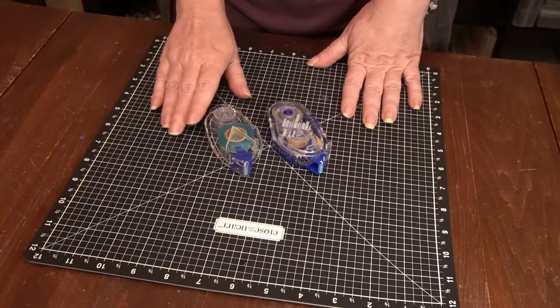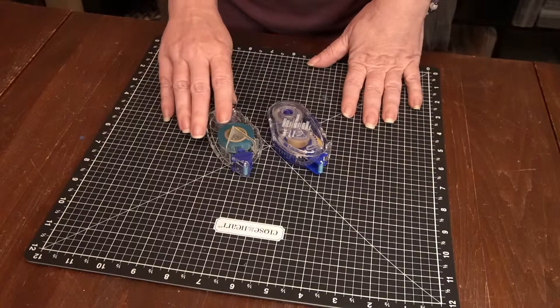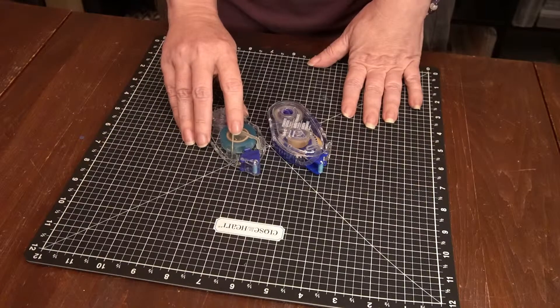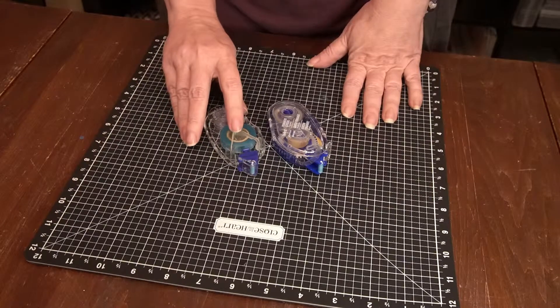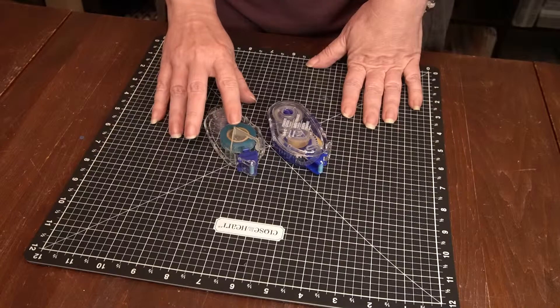This is a Tombow refill. This is exactly as it comes in the package with this little guard on, and with this refill you won't have to worry about winding the spool like you did with the Hermifix.